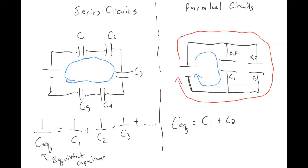I'll work an example on the next slide. What we do with the equivalent capacitance is plug it into the Q = VC equation. If there's only one capacitor, you just do Q = V times C. But if there are multiple capacitors, you first need to find the equivalent capacitance and then multiply by the voltage to determine the total charge.